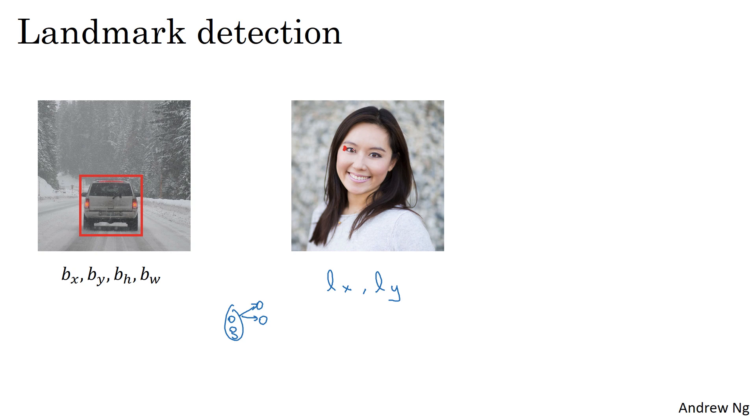Now, what if you wanted to detect all four corners of the eye, really of both eyes? If we call the points the first, second, third, and fourth points going from left to right, then you can modify the neural network now to output L1X, L1Y for the first point and L2X, L2Y for the second point and so on, so that the neural network can output the estimated position of all those four points of the person's face.